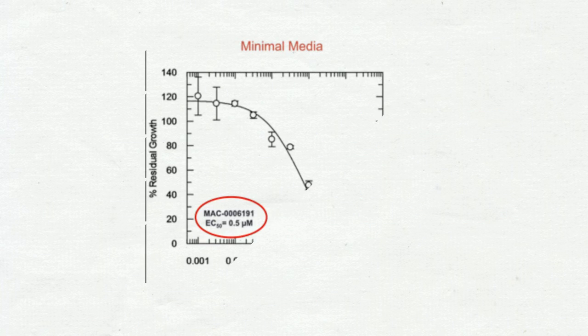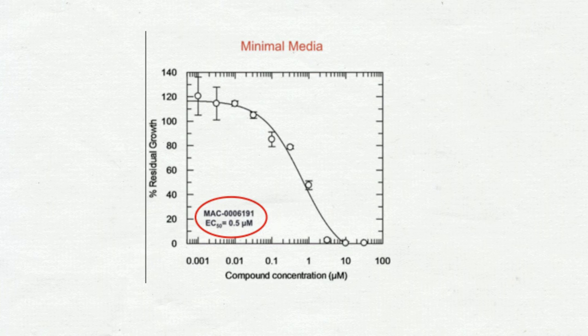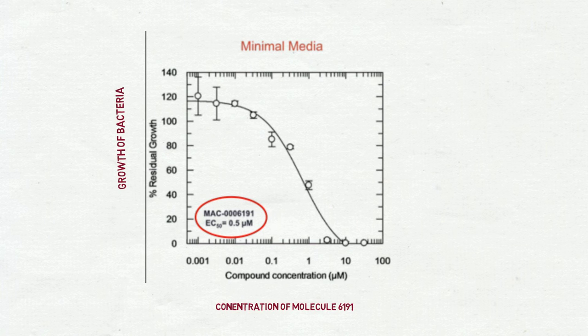So this graph shows how Somaya was able to find priority actives through the example of the molecule 6191. She tried to see whether there was a difference in bacterial growth in the minimal media and the supplemented media.